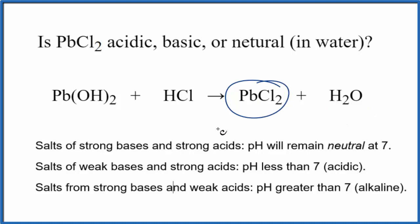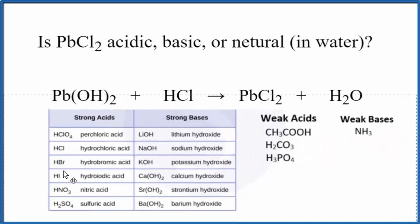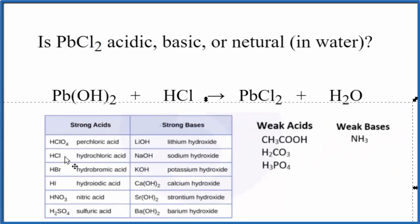It's a neutralization reaction. So we need to find the strengths of the base and the acid to use these rules here. This is a really nice table to do that with, a good one to memorize. We look for Pb(OH)2 under Bases, and it's not there. So if it's not on our list of strong bases, it's a weak base.